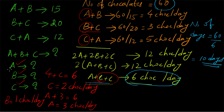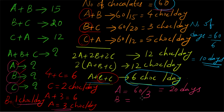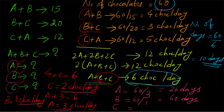Now we can find individual days. A has 3 chocolates per day, so A takes 60 divided by 3 equals 20 days working alone. B has 1 chocolate per day, so B takes 60 divided by 1 equals 60 days working alone. C has 2 chocolates per day, so C takes 60 divided by 2 equals 30 days working alone.